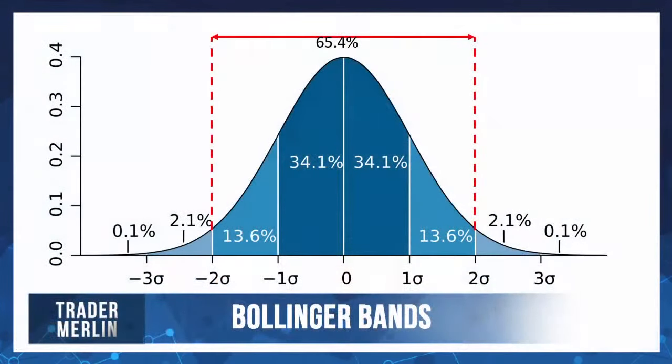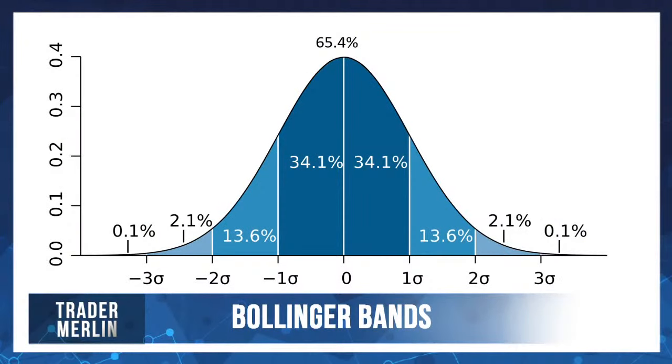That's essentially what John Bollinger, who created these bands, is attempting to do: show where those two standard deviations are to give a good probability that price stays within that range. Now you can modify it - if you went to one standard deviation, that would give you about 68% of the data. Most Bollinger Bands are set to two standard deviations as the standard.